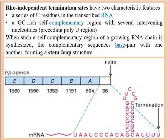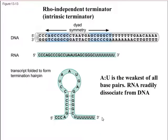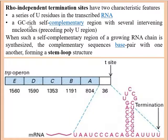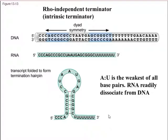The second feature is that just preceding this poly-U region, there will be a GC-rich region. Looking at the mRNA, at the 3' end there is a poly-uridine sequence, and just before that there is a GC-rich sequence. The peculiarity of this GC-rich sequence is that it is self-complementary — even though it has many intervening nucleotides, the regions are complementary to each other. When such a self-complementary region of a growing RNA chain is synthesized, these complementary regions base pair with one another forming a stem-loop structure.